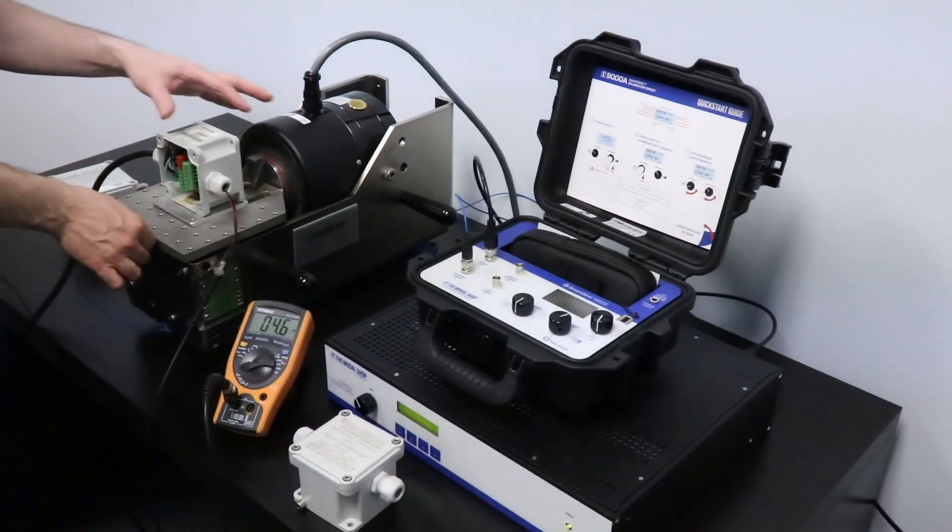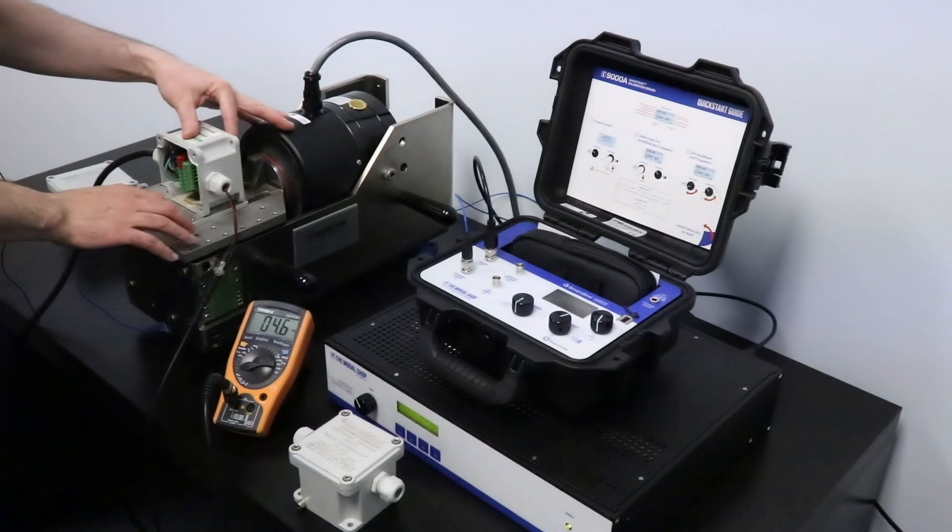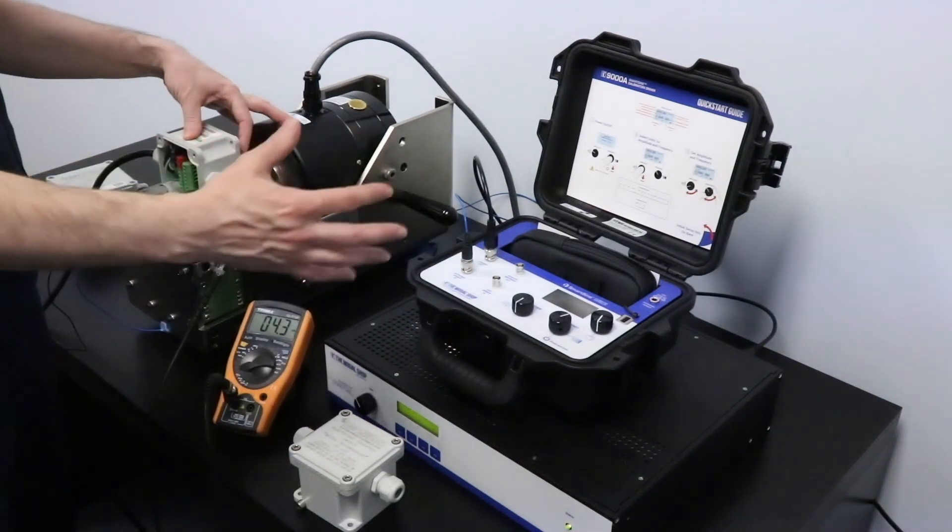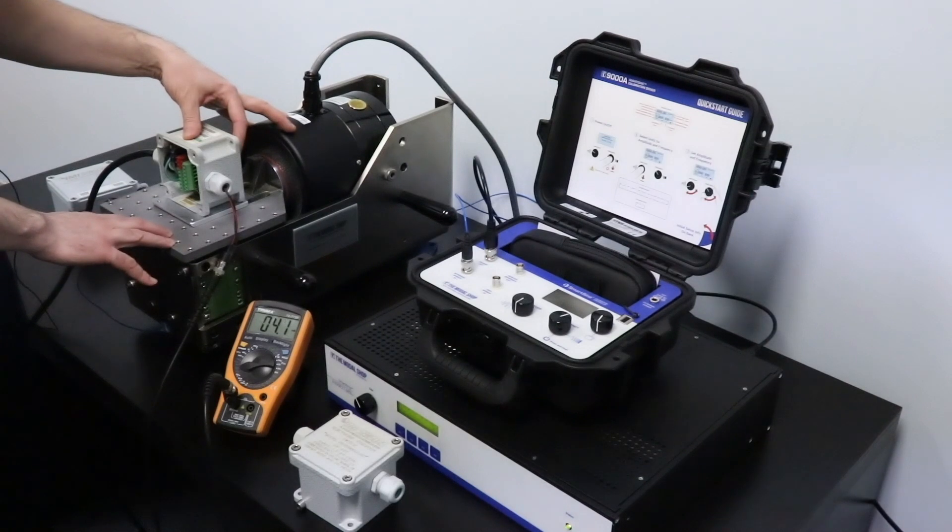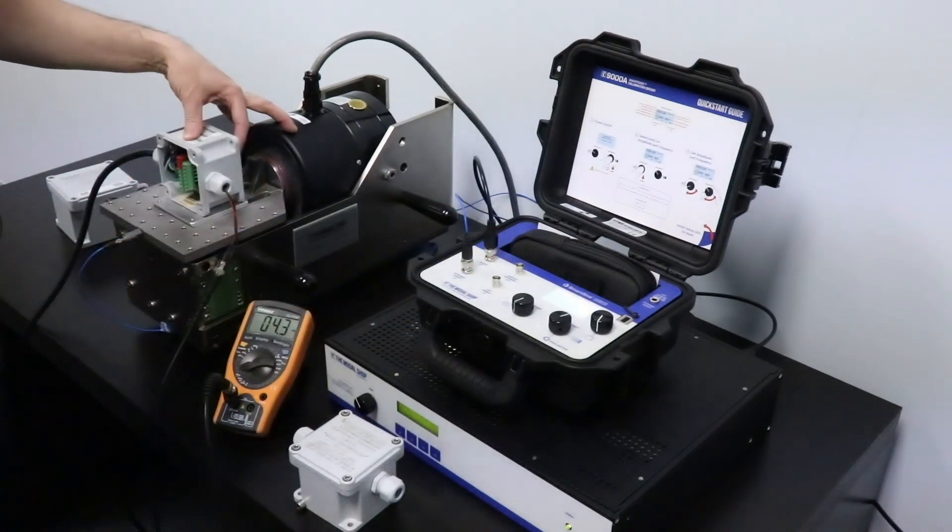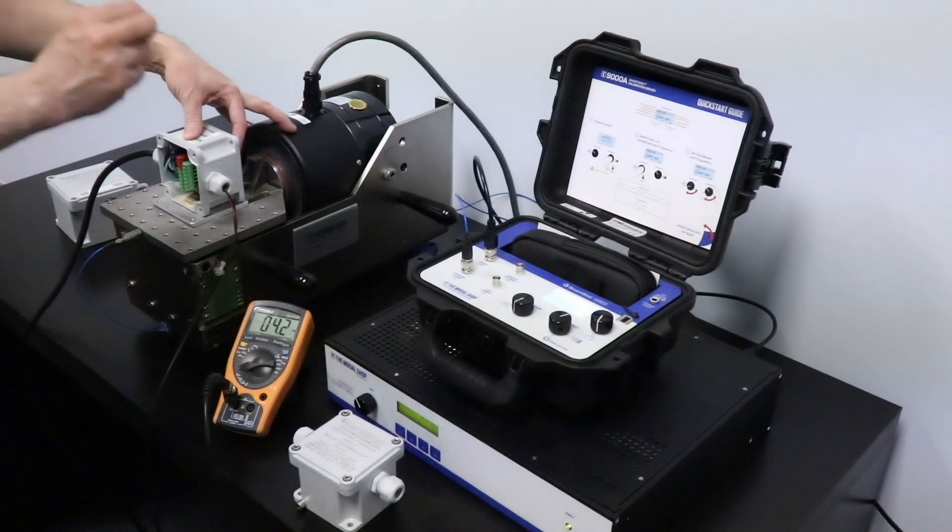The 9000A will automatically calculate the velocity associated with that vibration. And it's going to help me set up the right amplitude and levels for testing the switch.